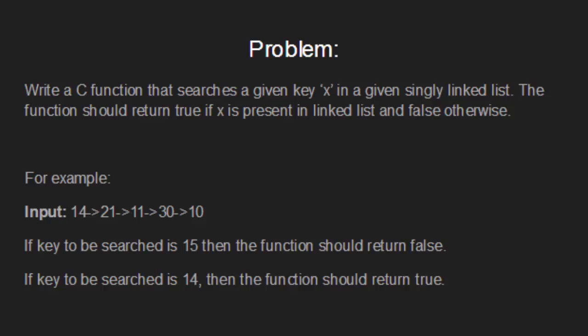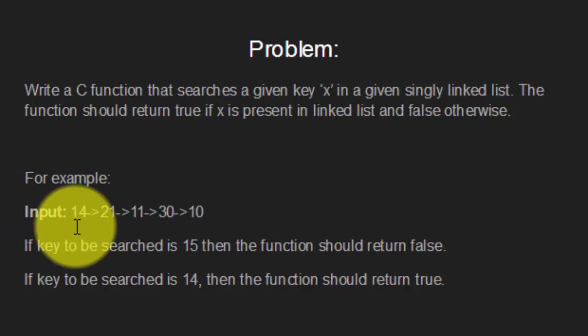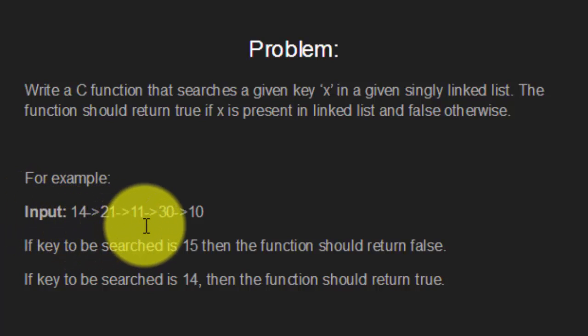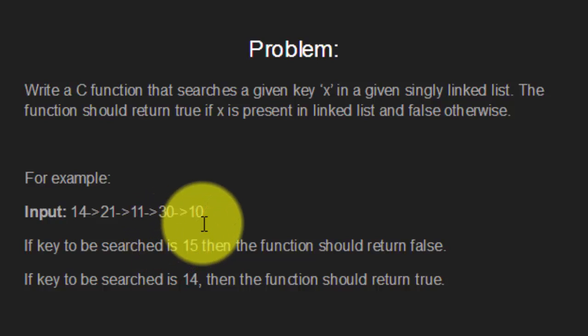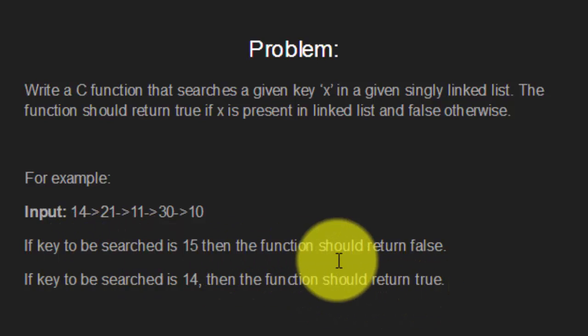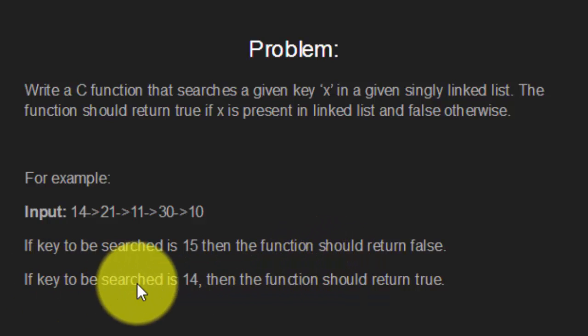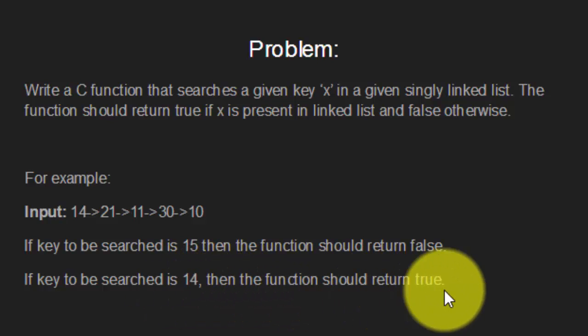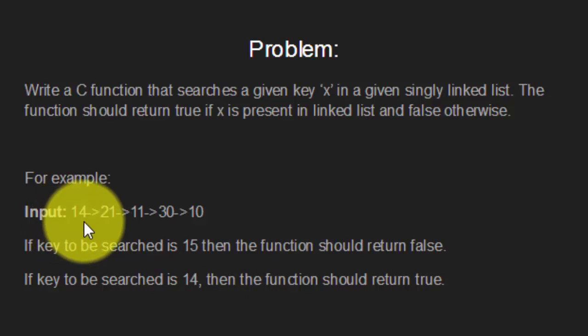We have to write a C function that searches a given key x in a given singly linked list. This function should return true if x is present in the linked list, otherwise it should return false. For example, if the input linked list is 14, 21, 11, 30, 10 and the key to be searched is 15, then this function should return false as the key is not present in the linked list. But if the key to be searched is 14, then this function should return true as 14 is present in the linked list.